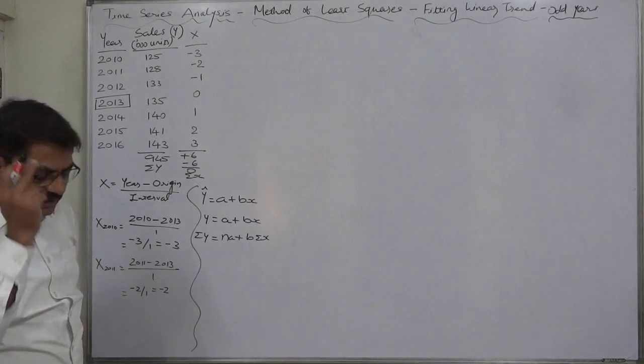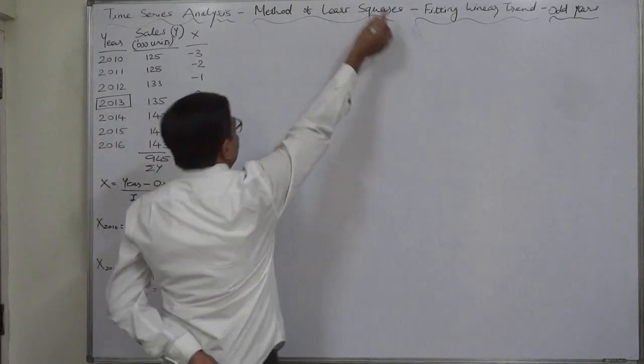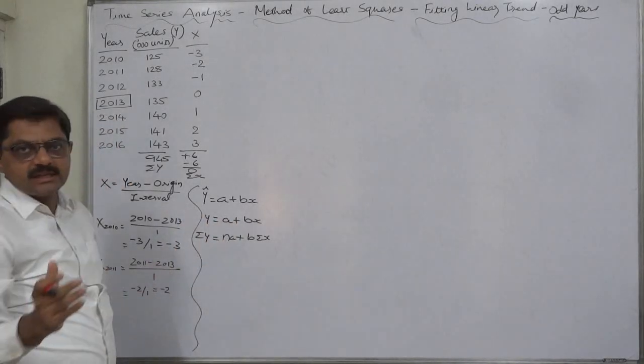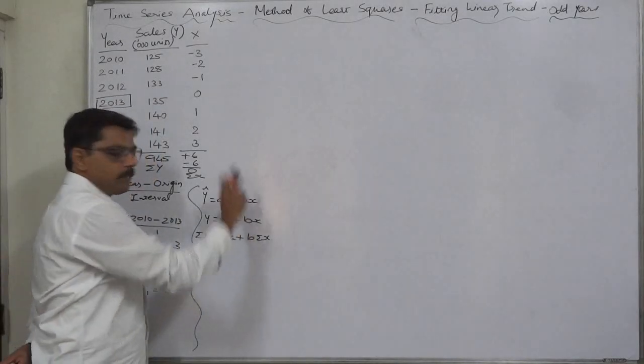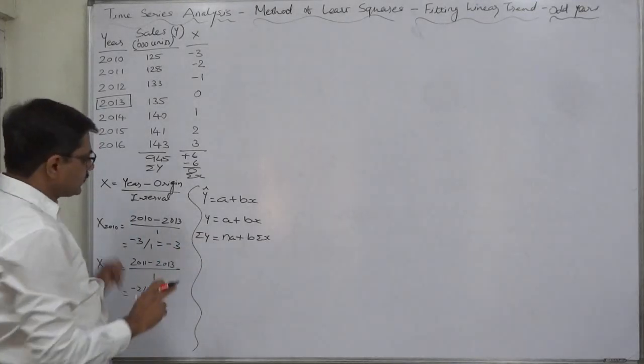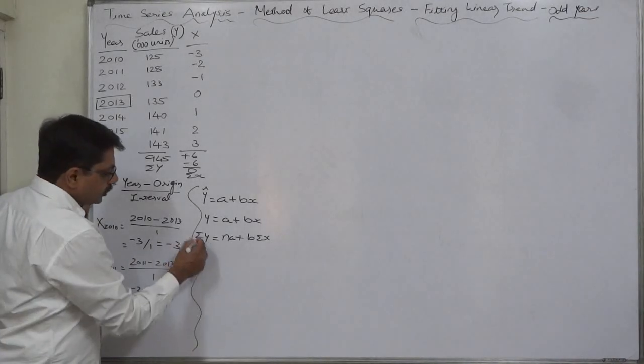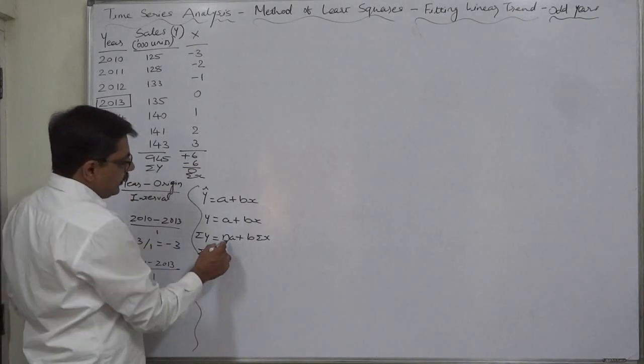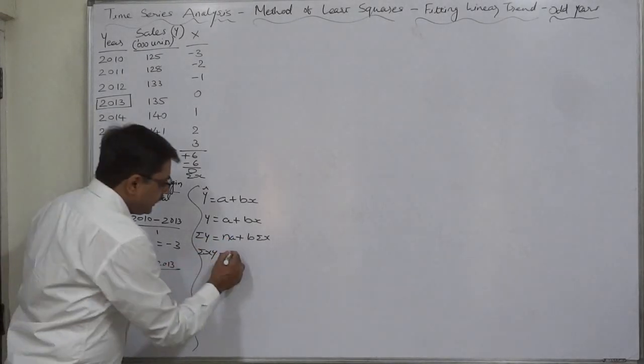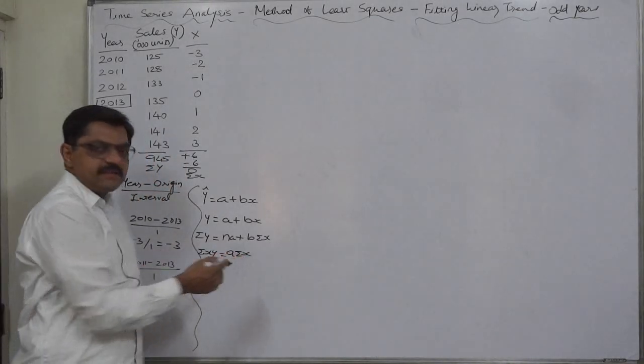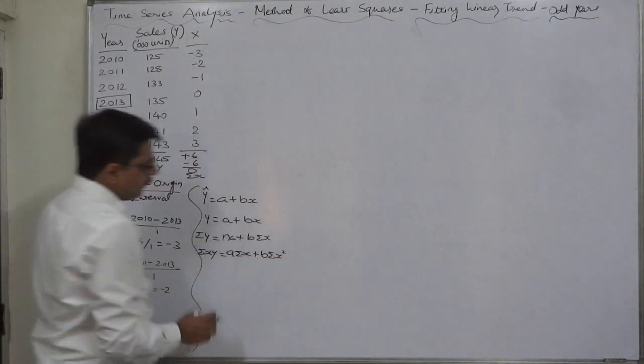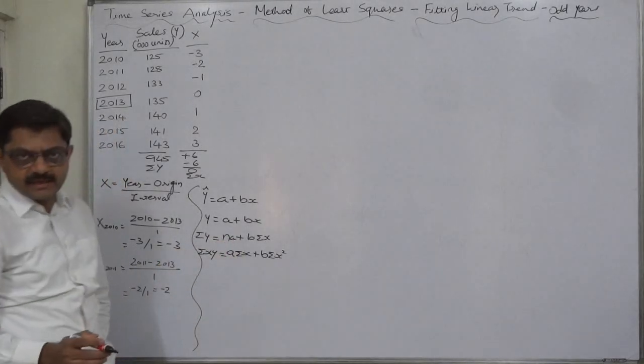We know that sigma with constant value becomes n, so it will be na. This is first normal equation. It is known as normal equation. It is obtained by the method of least squares. We need second because we want to find out two constant values a and b. B is nothing, it is like coefficient of regression, it is the slope of the line. To derive the second normal equation we just need to multiply the first normal equation by X, so it will be sigma XY equals to a sigma X plus b sigma X square.